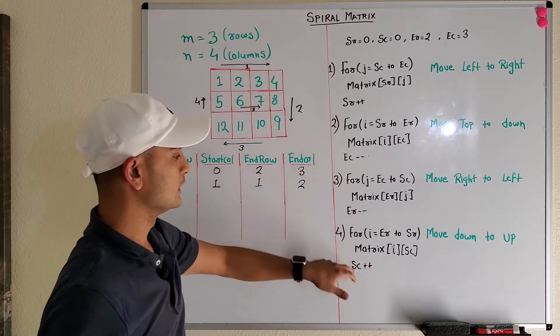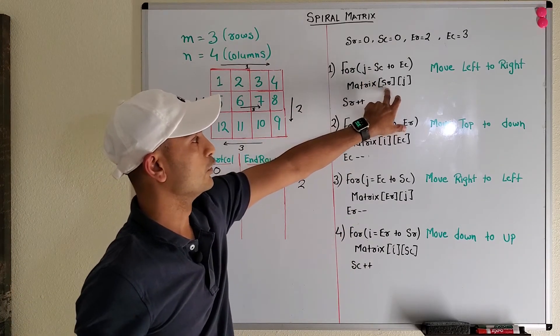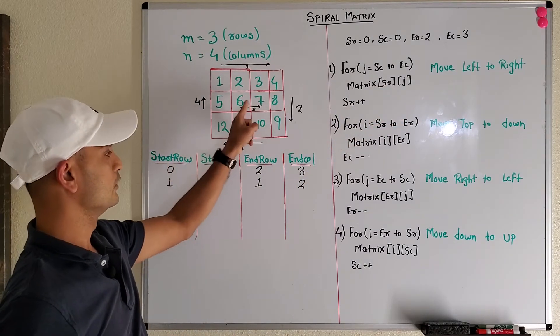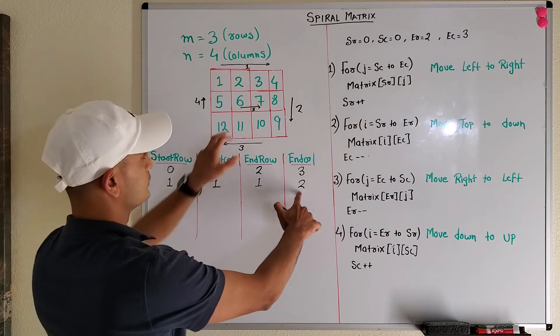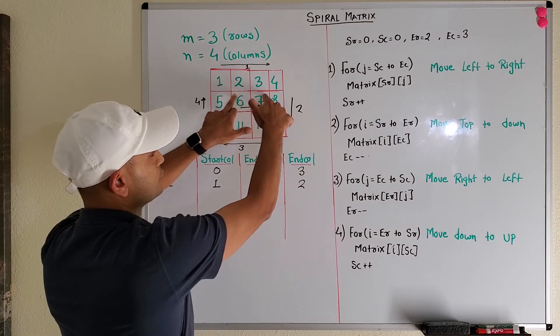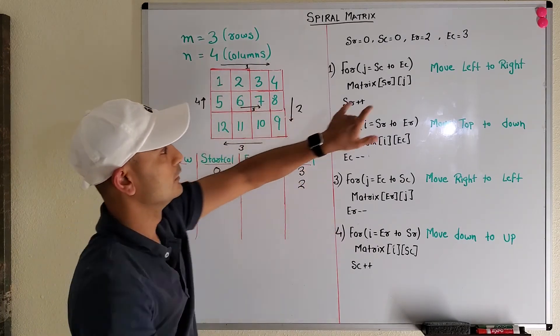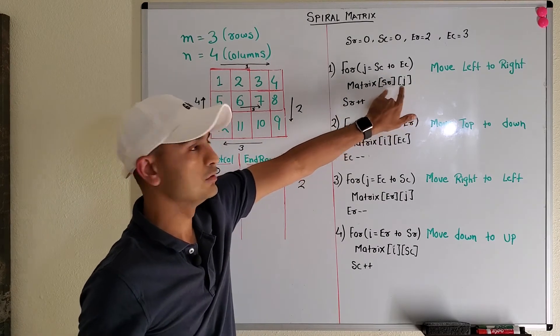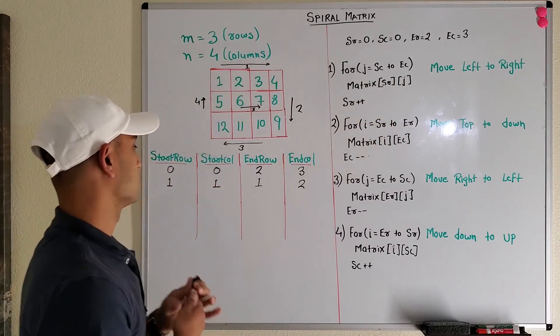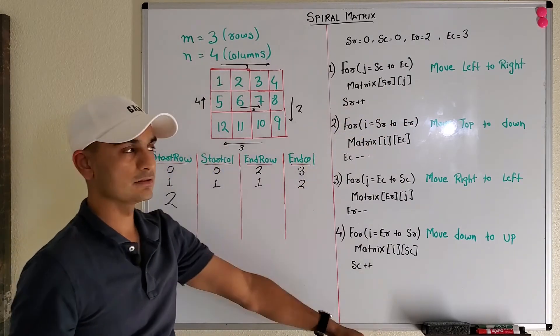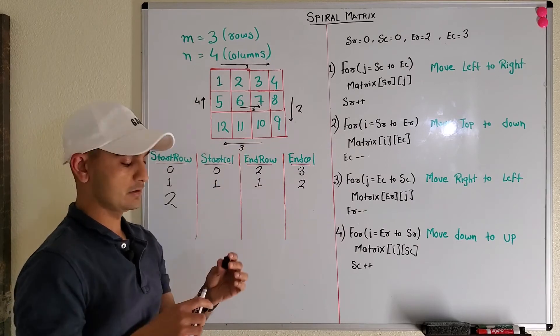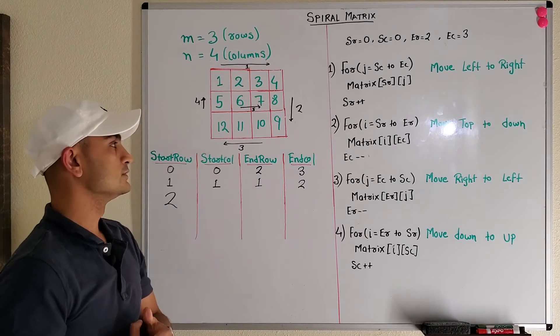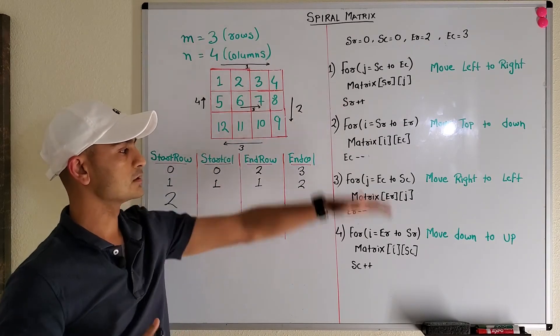The last thing that is left is six and seven. Once we do this, we come back here. Now we go to matrix of start row. Now start row is one, this is the row, and start column is one, end column is two. So we'll just be accessing six and seven. Loop from start column to end column, access the elements in the start row, and do start row plus plus to two. Then we exit the code since we've finished the matrix. That's the complete logic to solve this problem.